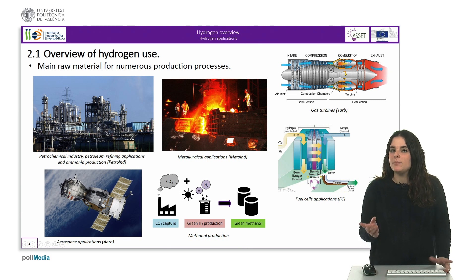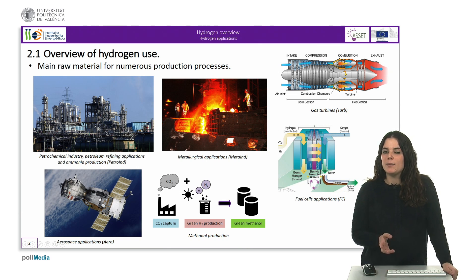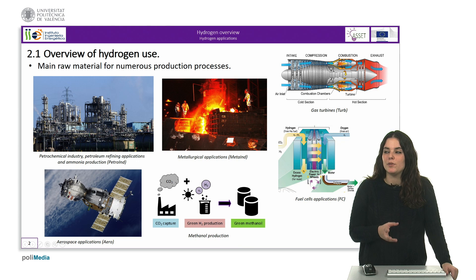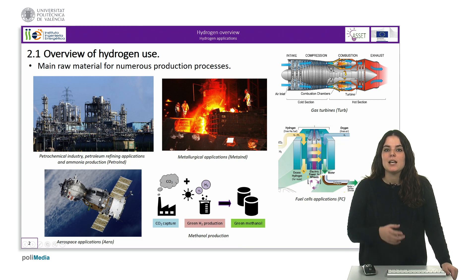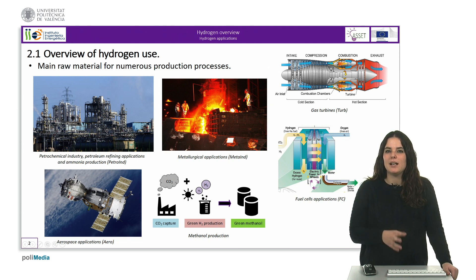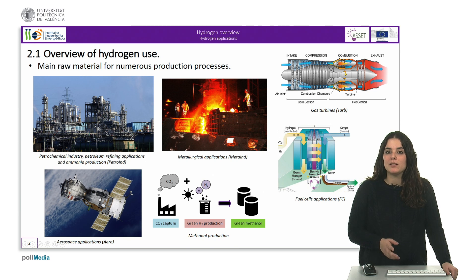Hydrogen has been and is the main raw material for numerous production processes. The petrochemical industry, petroleum refining applications, and ammonia production are by far the largest consumers of Hydrogen, followed by methanol production and metallurgical applications.